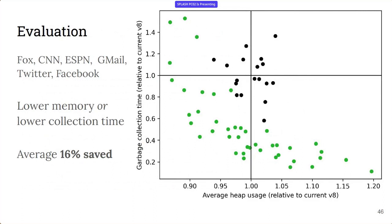Okay, so that's our implementation in V8. Now let's see some evaluation. We evaluated our work on six popular websites: Fox News, CNN, ESPN, Gmail, Twitter, and Facebook. Every point on this graph is an experiment. The black point is the baseline, and the green point is us. As you can see, the green points are to the left or to the bottom of the black points. This means we are either saving space or saving time. There are also green points that are both to the left and to the bottom of the black points. This means we are saving both space and time at the same time. So we are making real improvements. On the other hand, there are no points to the right and to the top of the black points. This means we are not regressing.